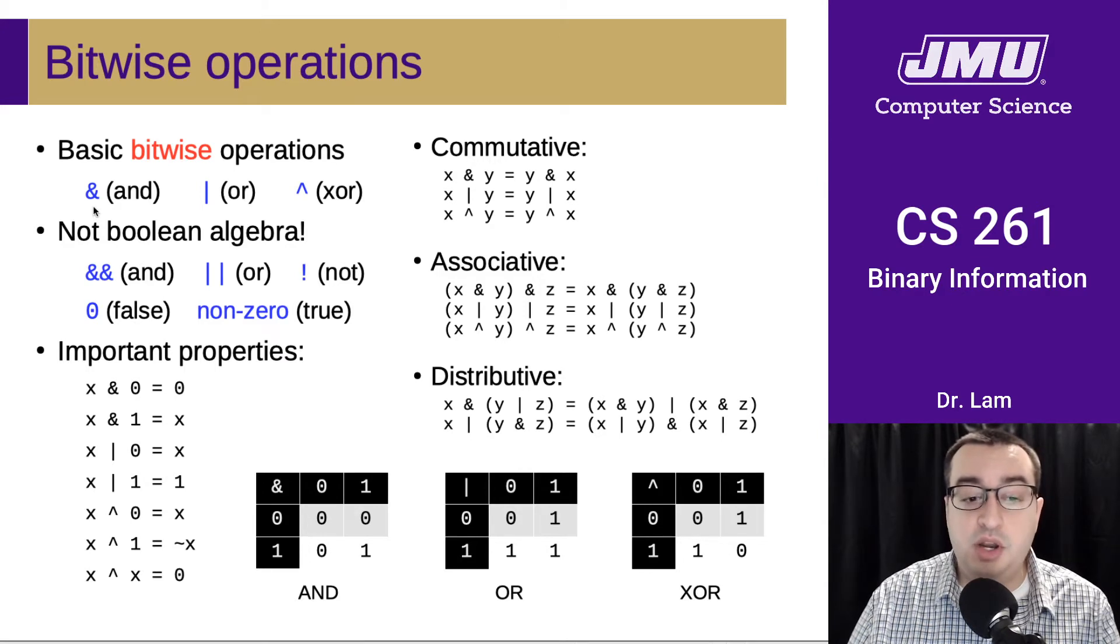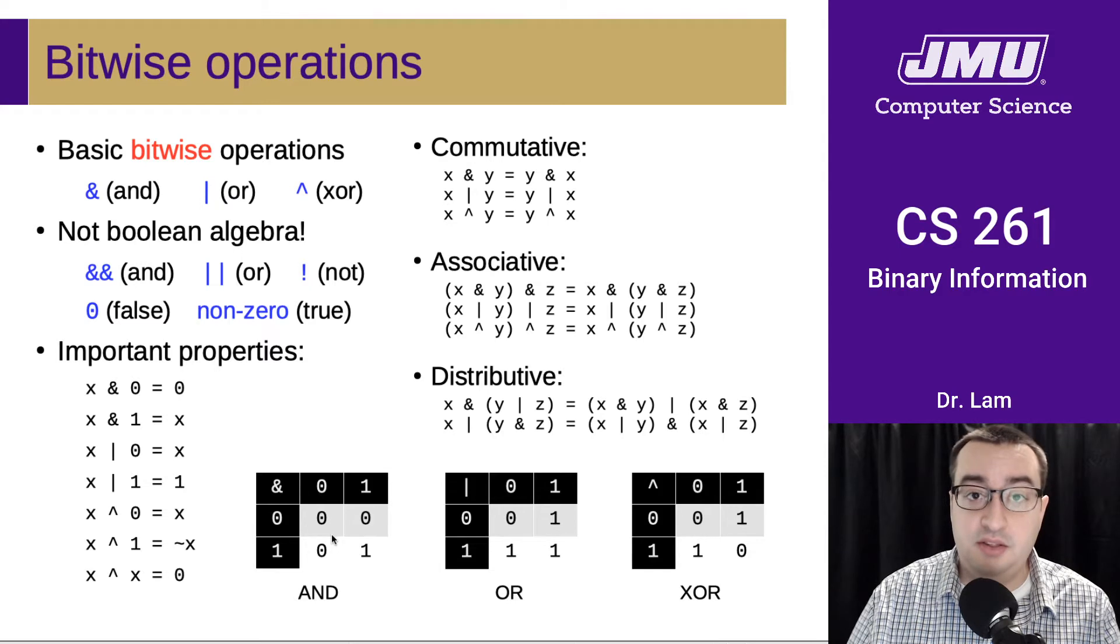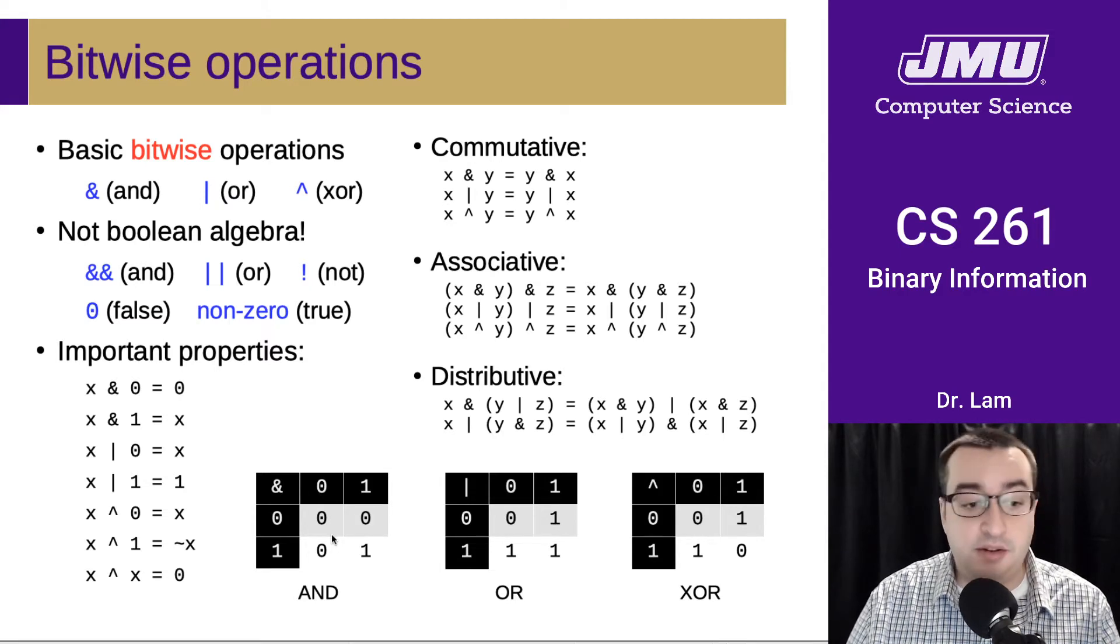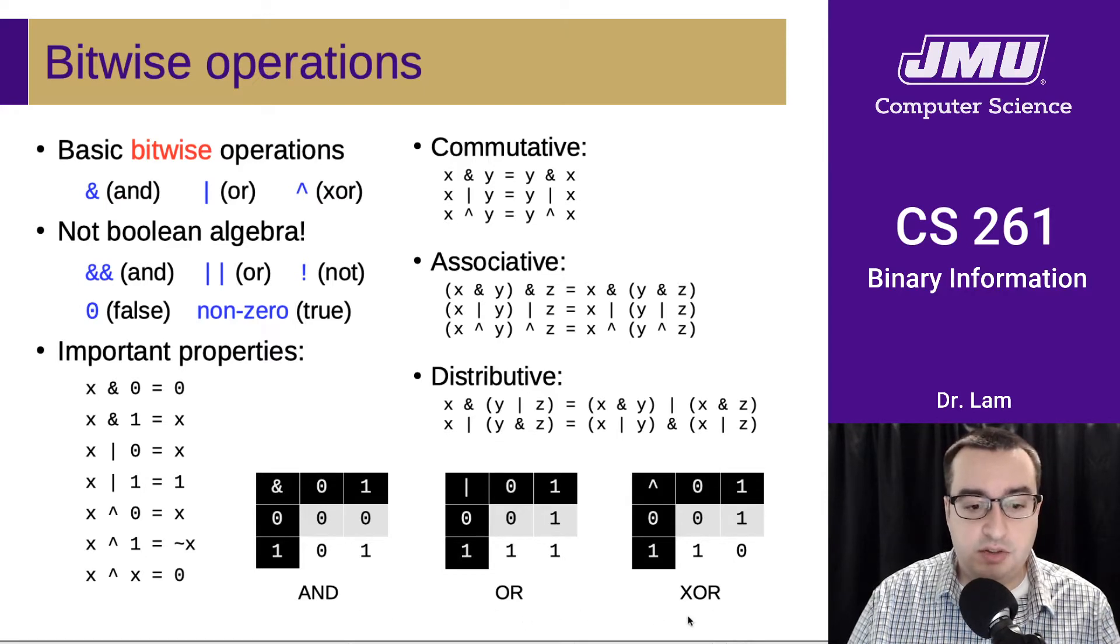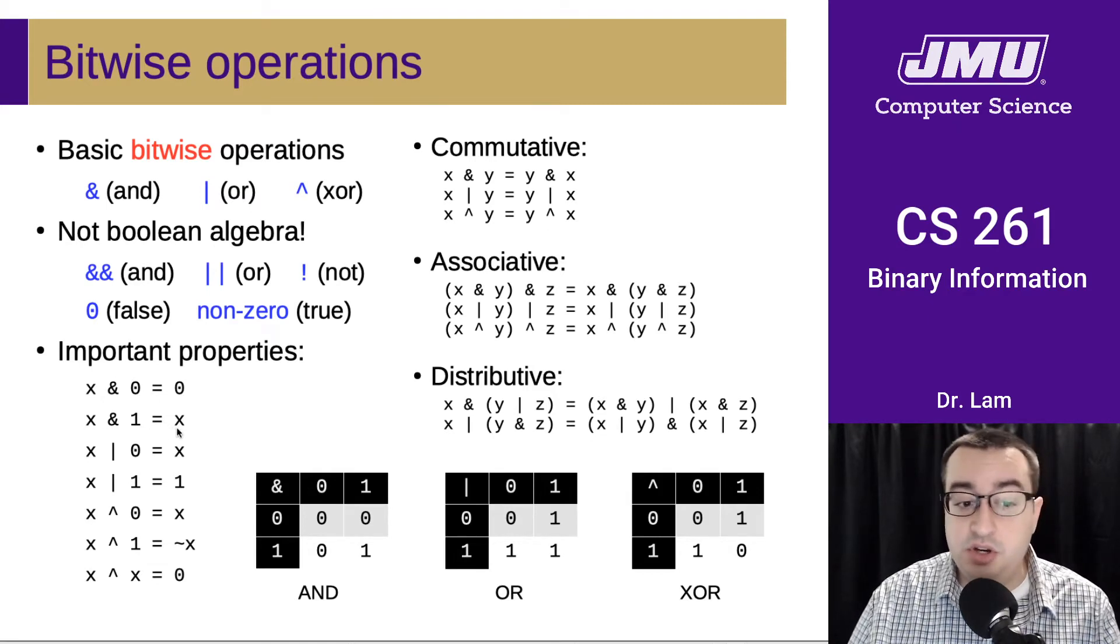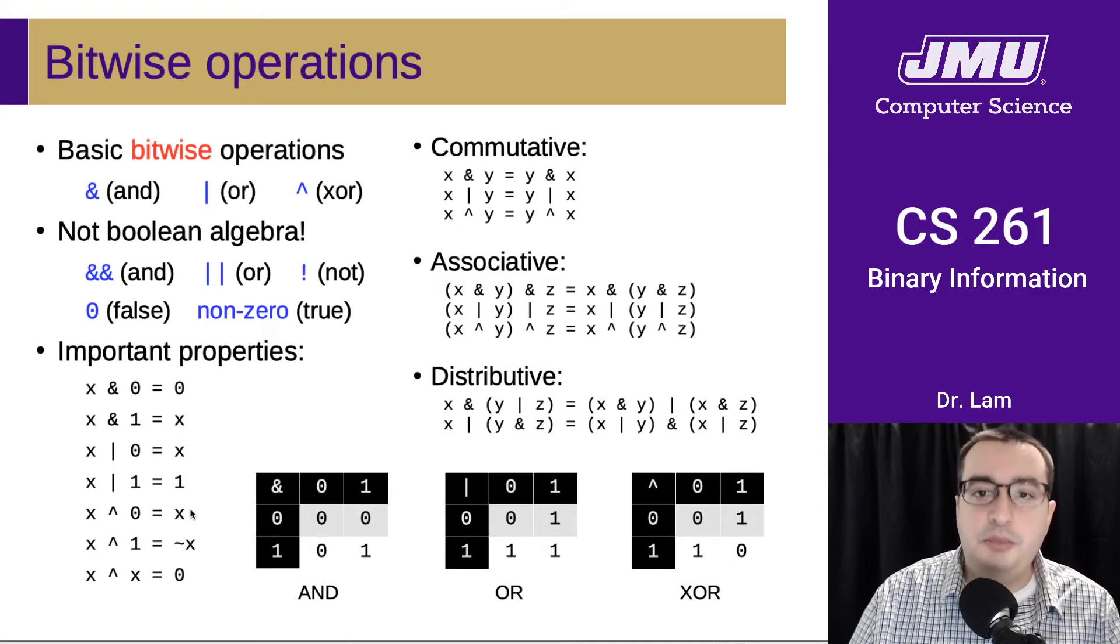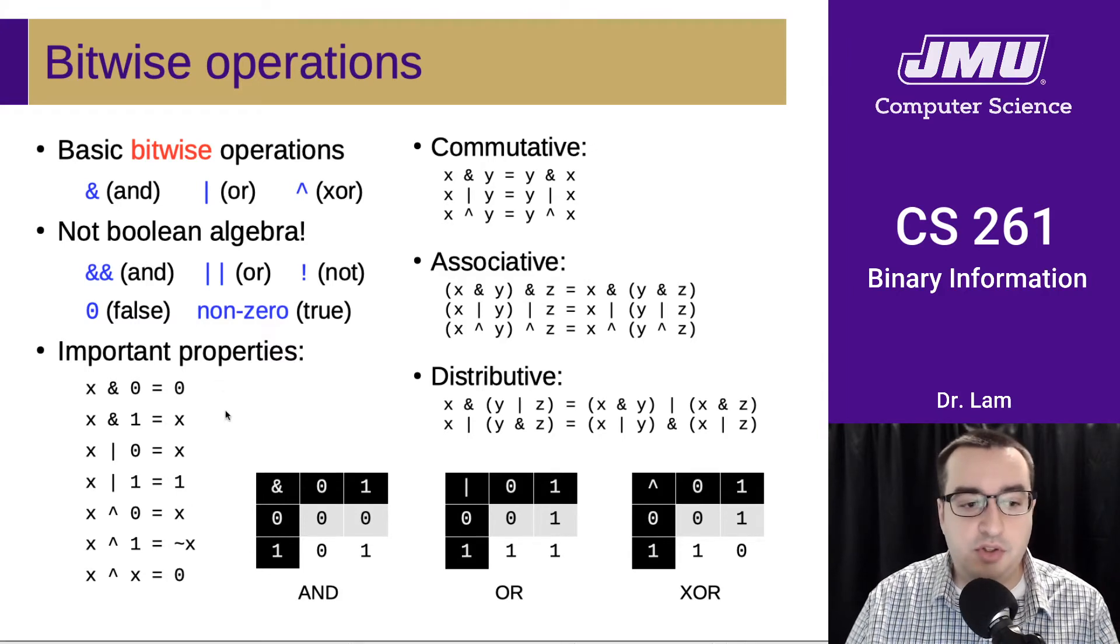If we do a bitwise AND, it does the AND operation for every pair of bits in the two incoming operands. The truth tables for these operations are what you would expect. There are some important properties here. For instance, anything bitwise AND with 0 is 0, and anything bitwise AND with 1 is that thing. You should look through these and work out a couple of examples to convince yourself that all these properties are true.